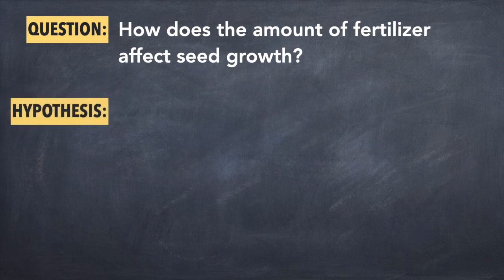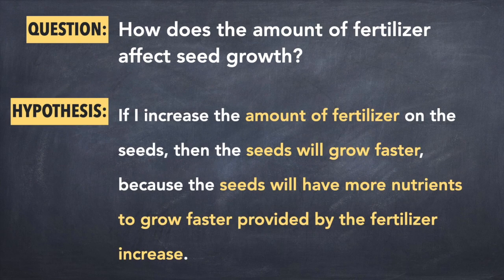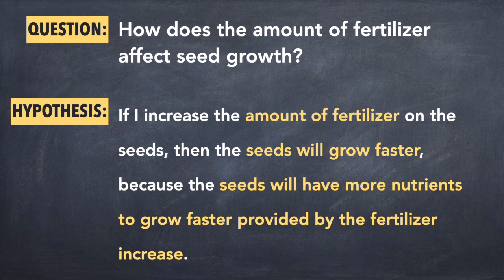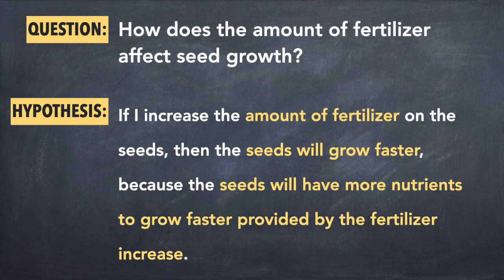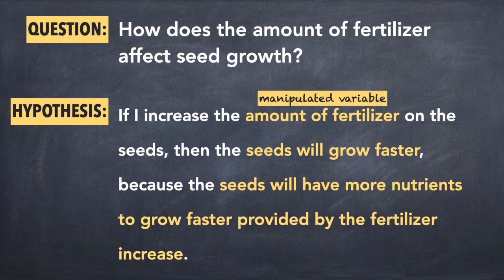Our hypothesis then would be if I increase the amount of fertilizer on the seeds, then the seeds will grow faster because the seeds will have more nutrients to grow faster provided by the fertilizer increase. In this hypothesis, the manipulated variable is the amount of fertilizer. And the responding variable is the growth of the seeds.